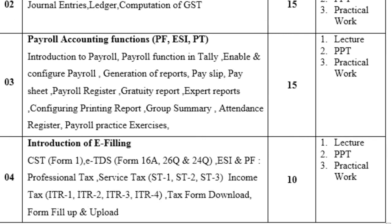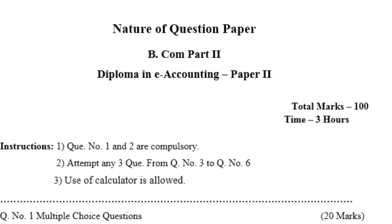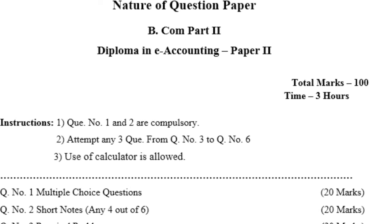The nature of the question paper for paper number 2 is similar: question number 1 and question number 2 are compulsory; attempt any 3 questions from question number 3 to 6; basic calculator is allowed. Question number 1 includes multiple choice questions with 4 options — 20 marks. Question number 2 is short notes, any 4 out of 6 — 20 marks. Questions 3, 4, and 5 are practical problems worth 20 marks each, and question number 6 is a practical problem worth 20 marks.